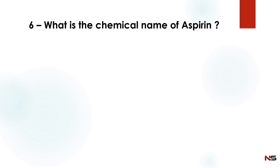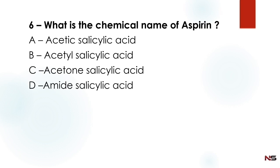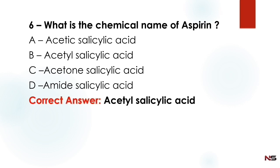Next question: What is the chemical name of aspirin? Option A: acetic salicylic acid. Option B: acetyl salicylic acid. Option C: aceton salicylic acid. Option D: amide salicylic acid. The correct answer is Option B — acetyl salicylic acid.